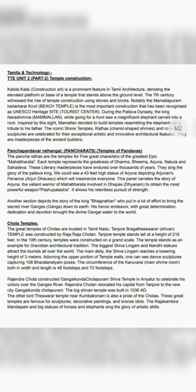Rajendra Chola constructed Gangaikonda Cholapuram, a Siva temple in Ariyalur, to celebrate his victory over North India and the Ganges river. Rajendra Cholan also relocated his capital city from Tanjur to the new city Gangaikonda Cholapuram, developing that area further. The big Sivan temple was built in 1036 AD. The Lord Tejaswara temple near Kumbhakonam is also a pride of the Cholas. So many great temples were constructed.